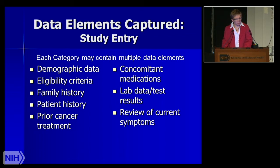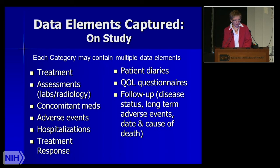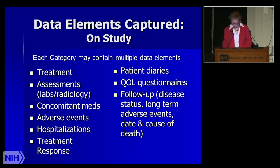At study entry, some data elements that could be captured include demographic data, eligibility criteria, family history, and patient history. Each of these may have multiple data elements within them. On study, each category can contain multiple data elements and may include treatment, assessments of labs, radiology, concomitant medications, adverse events, hospitalizations, treatment response, and patient-reported outcomes forms such as diaries and quality-of-life questionnaires. These are all things you want to consider as you're developing your case report forms.